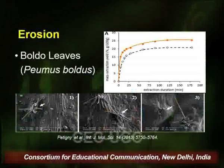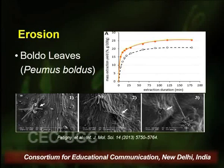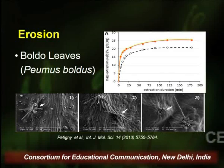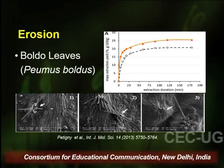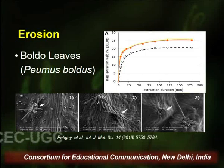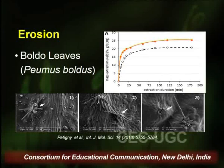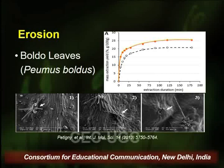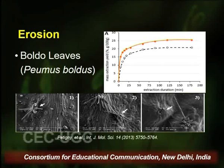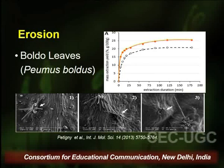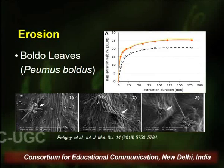In the picture, the first image shows the normal surface of boldo leaves — you can clearly see the trichomes and stomata. The second picture shows the surface after extraction by maceration; trichomes are still intact and stomata are present. The third picture shows a significant change in surface morphology after ultrasound-assisted extraction — trichomes were eroded or significantly reduced, and overall surface morphology was completely changed, resulting in a significant increase in extraction yield.